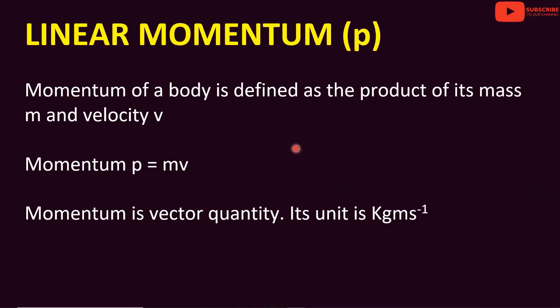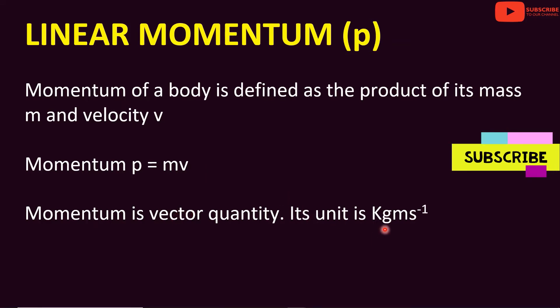What is momentum? The momentum of a body is defined as the product of its mass m and velocity v. Momentum p is equal to m into v — that is mass into velocity. Momentum is a vector quantity and its unit is kilogram meter per second.